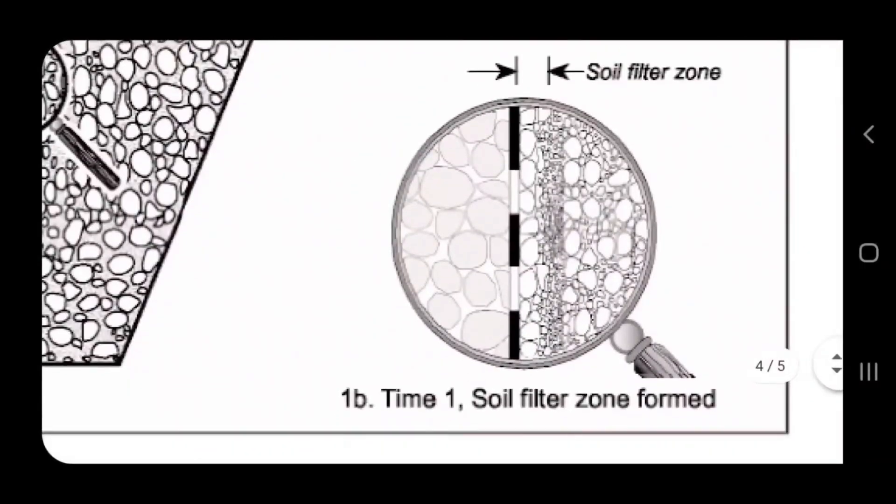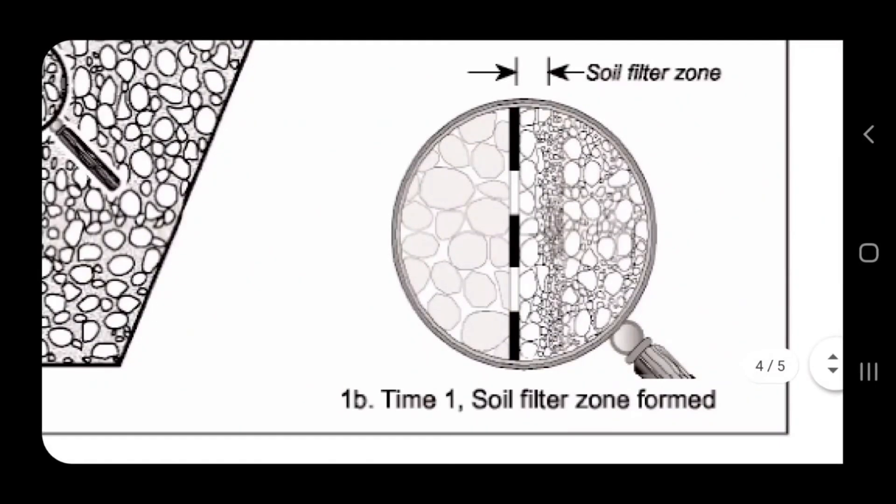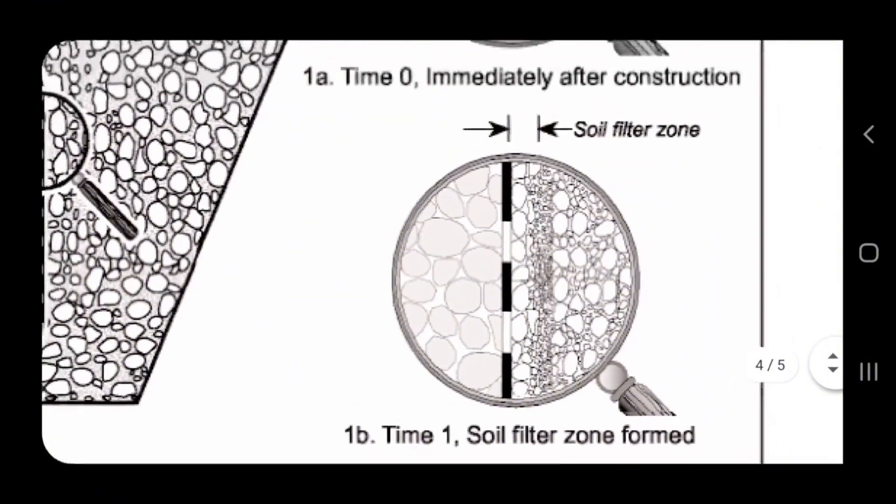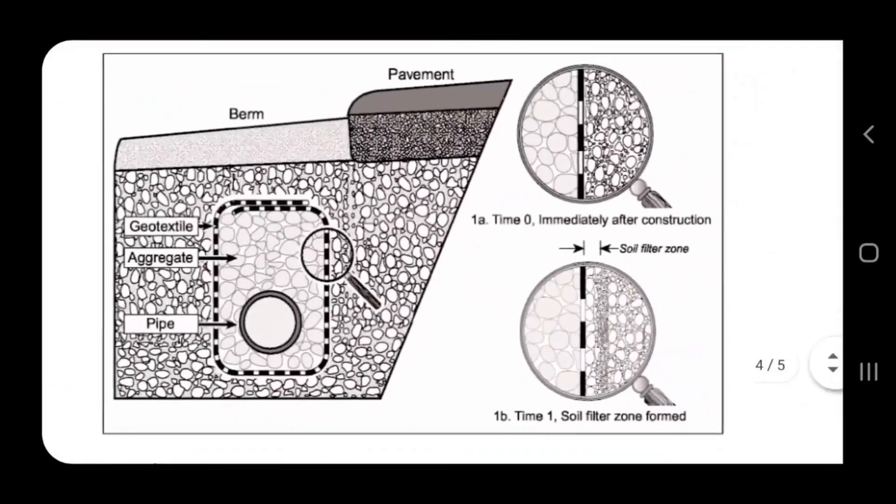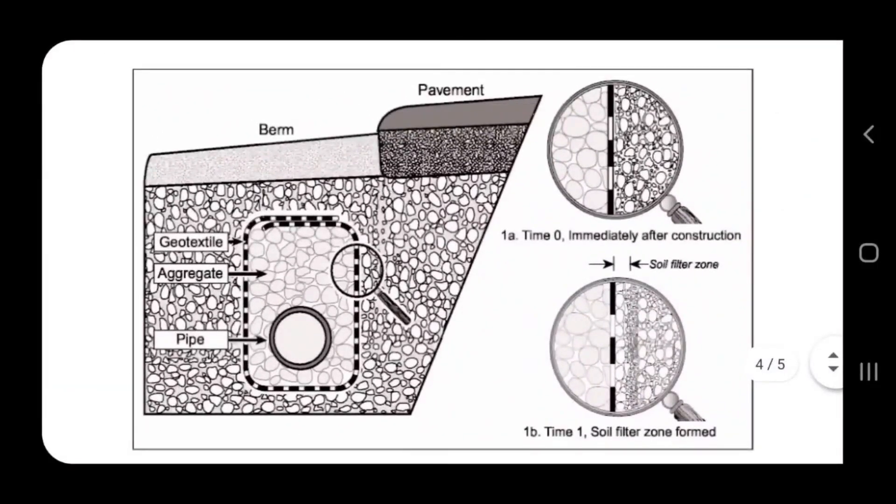This soil filter zone that forms between the non-woven geotextile fabric that's double punched and the native soil - that is key, along with hydrostatic pressure and all kinds of different things that make this extremely geeky, and we're not going to even go there.